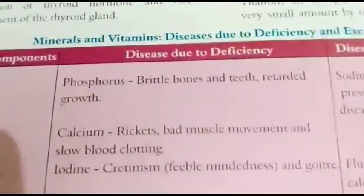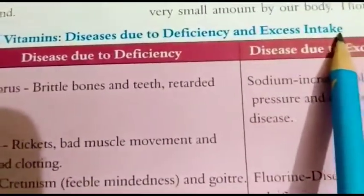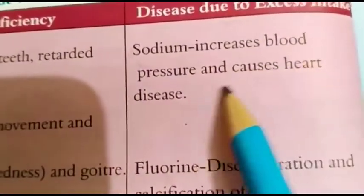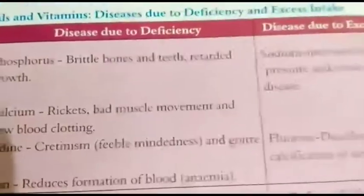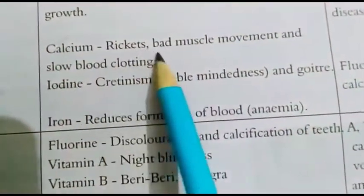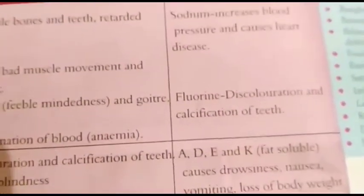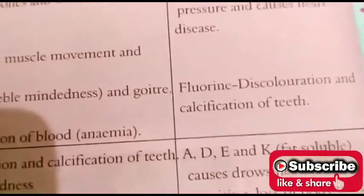Up to here, the content covers minerals, vitamin deficiency diseases, and the effects of excess intake. A chart shows food components and related diseases: phosphorus deficiency causes brittle bones, retarded growth; sodium excess increases blood pressure and causes heart disease; calcium deficiency causes bad muscle movements and slow blood clotting; fluorine excess causes discoloration and calcification of teeth.